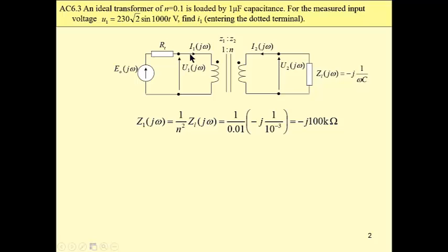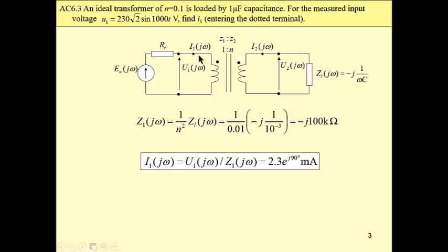To calculate this current, we may apply Ohm's law. We know this voltage, and we have to divide this voltage by this impedance to obtain this current in phasor domain. And this is 2.3 milliamps, phase shift is 90 degrees.